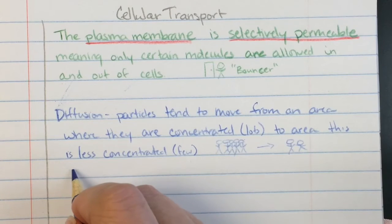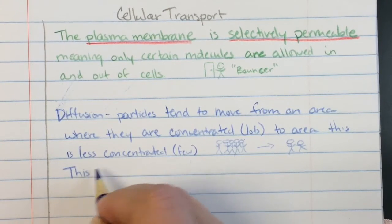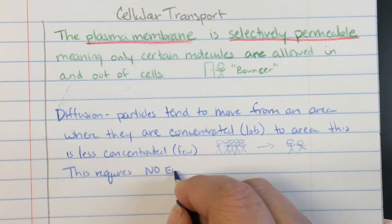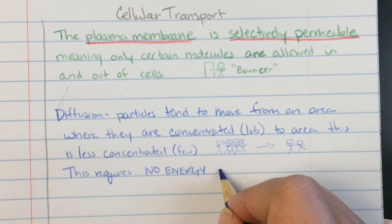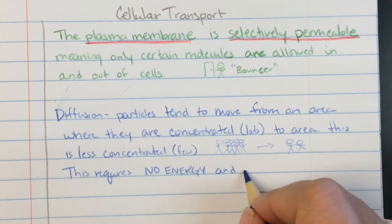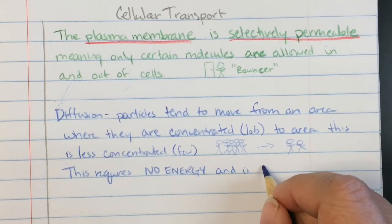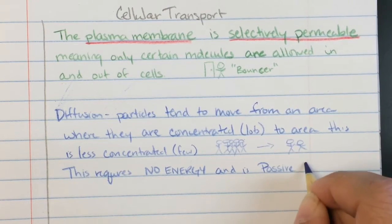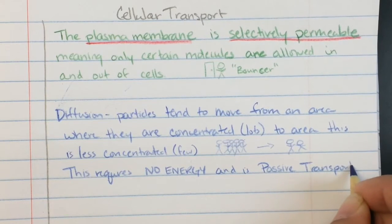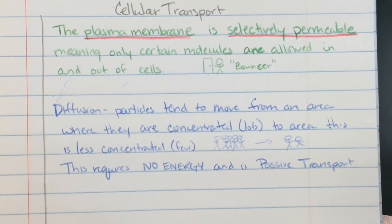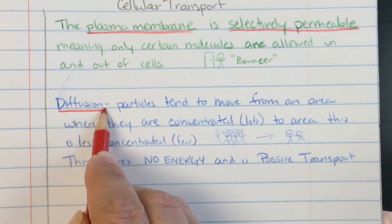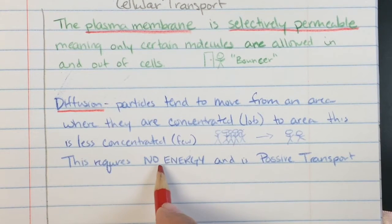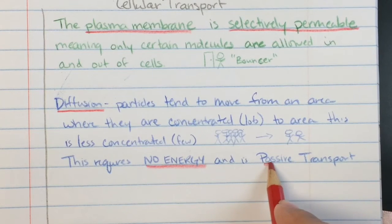This requires no energy and is a form of passive transport. Passive transport just means it's natural, it happens, no extra energy required, it's easy to do, not a problem. So key words here, we've got diffusion and the big thing, no energy, passive transport.